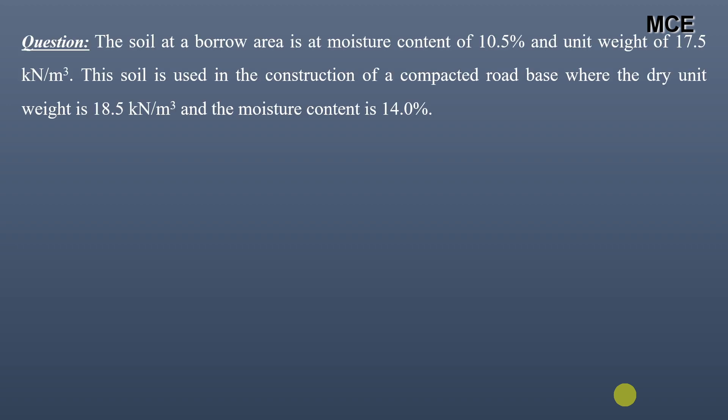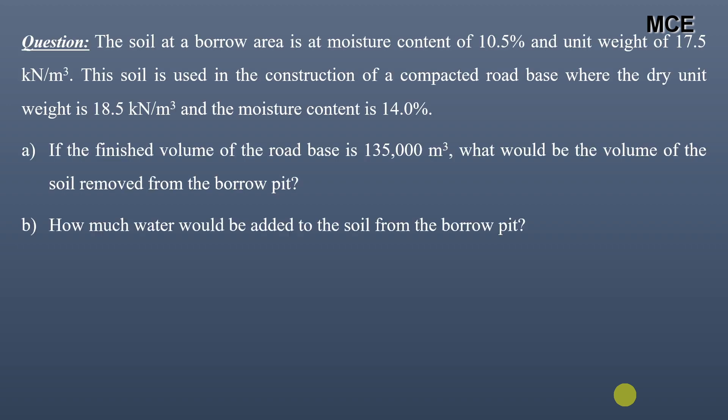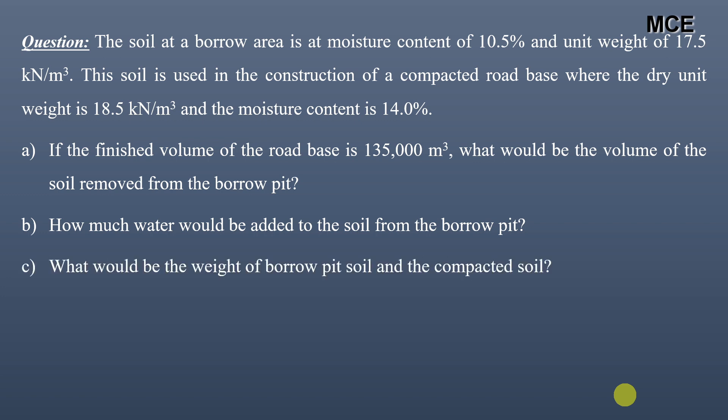We often have to calculate the volume of soil required for constructing a new road embankment or filling any land. For this we need to know the volume of soil that needs to be extracted from the borrow pit and the quantity of water that should be added to compact it at maximum dry density and optimum moisture content. Welcome back to Master Soil Engineering. In this video we will learn how to calculate the quantity of soil required for constructing a new compacted road base.